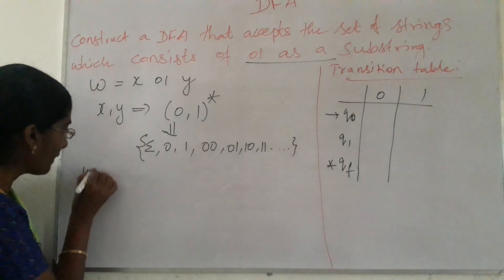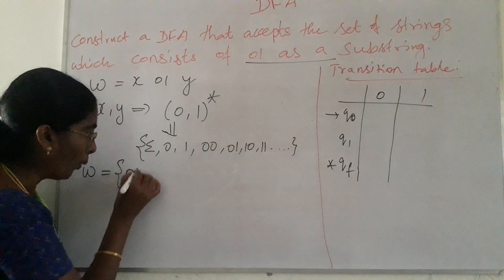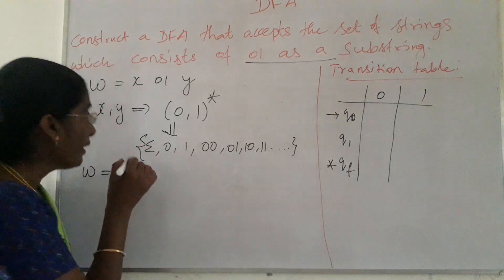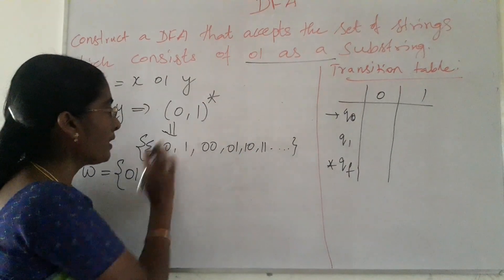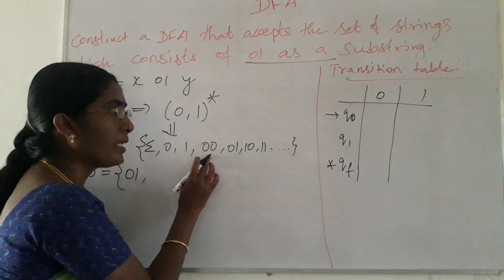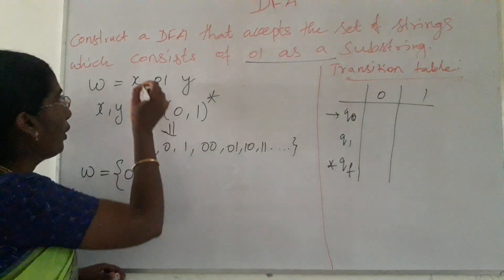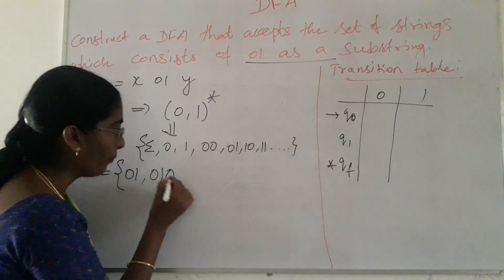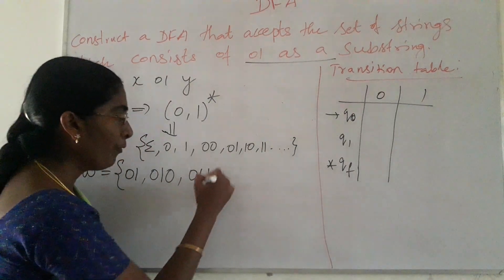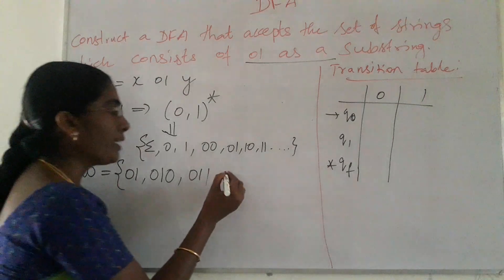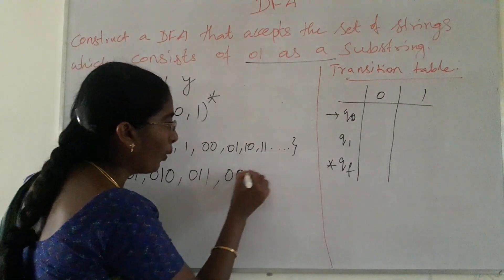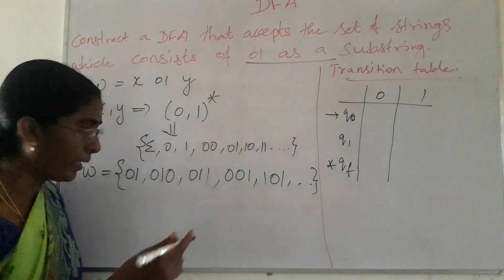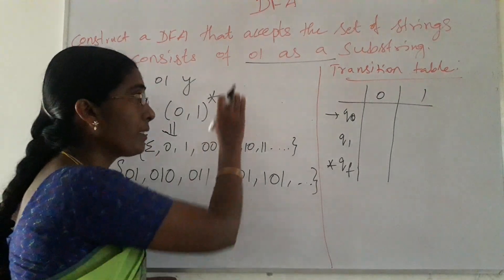Some acceptable strings for this example: the minimum string accepted by this DFA is '01'. By substituting epsilon for X and '0' for Y we get '010'; substituting '1' for Y gives '011'; epsilon for Y gives '01'. For X equal to '0' we get '001'. Substituting further: '0011', '01', and so on. Any number of symbols can be replaced for X and Y, and these are some example strings accepted by this DFA.